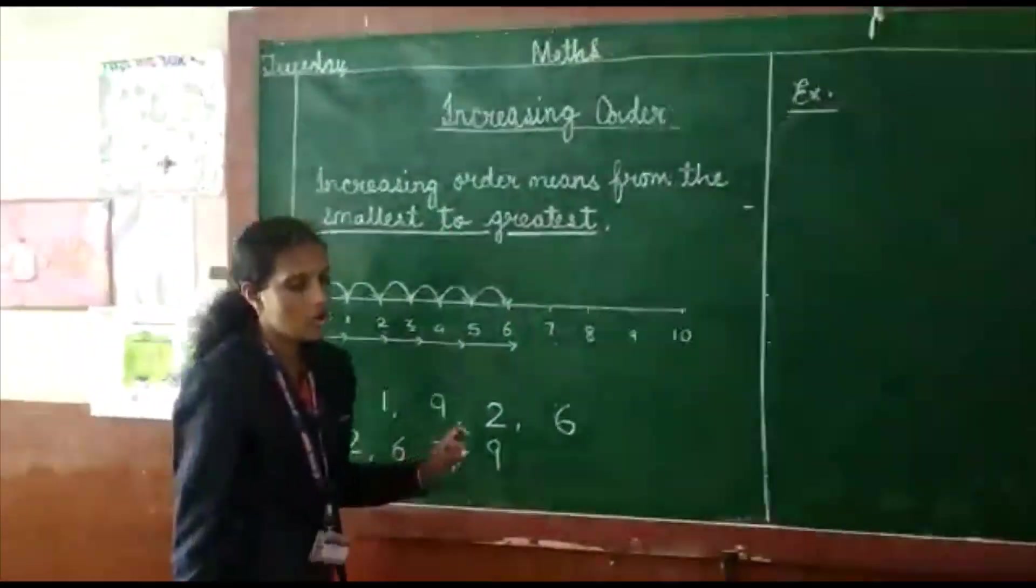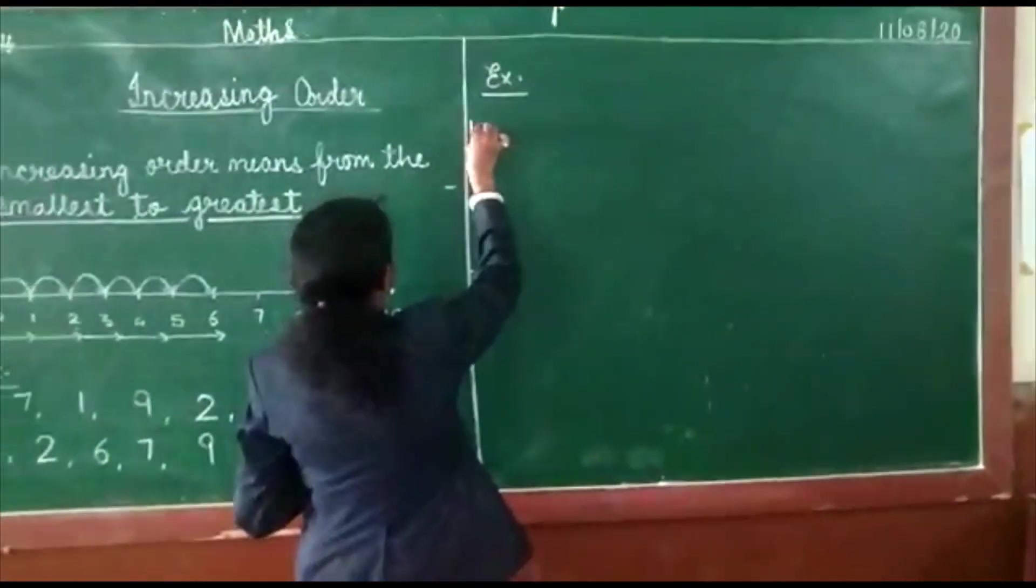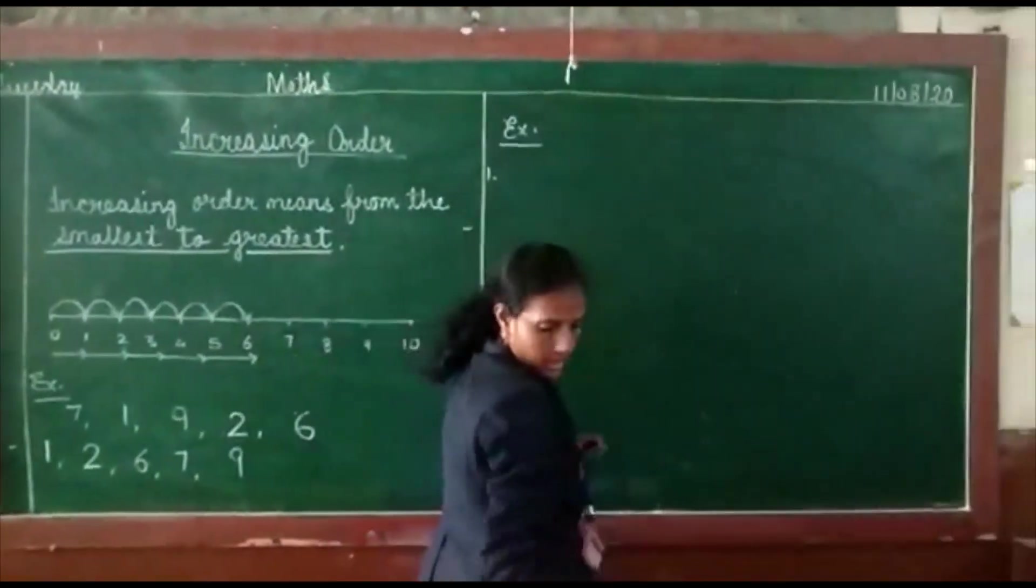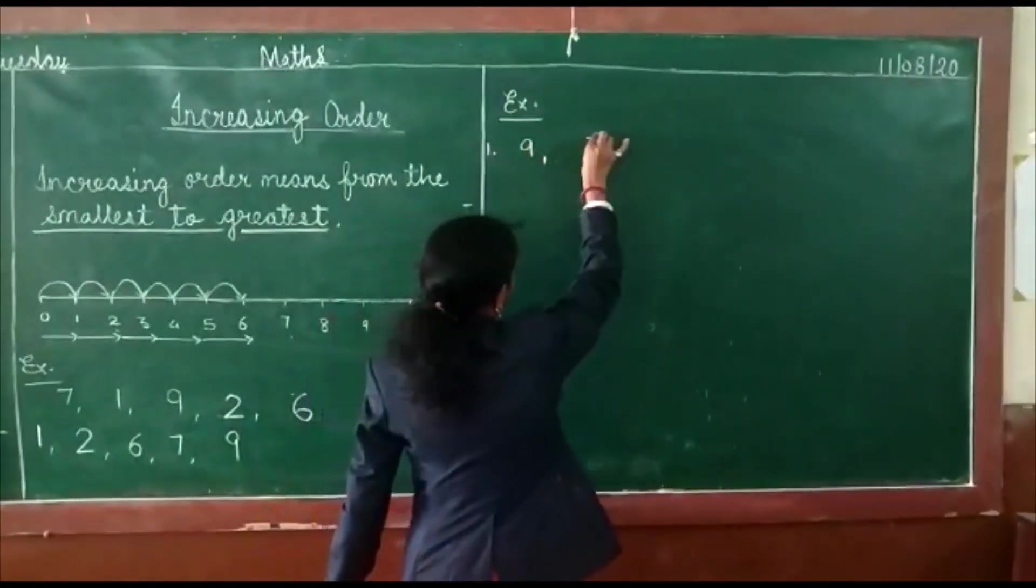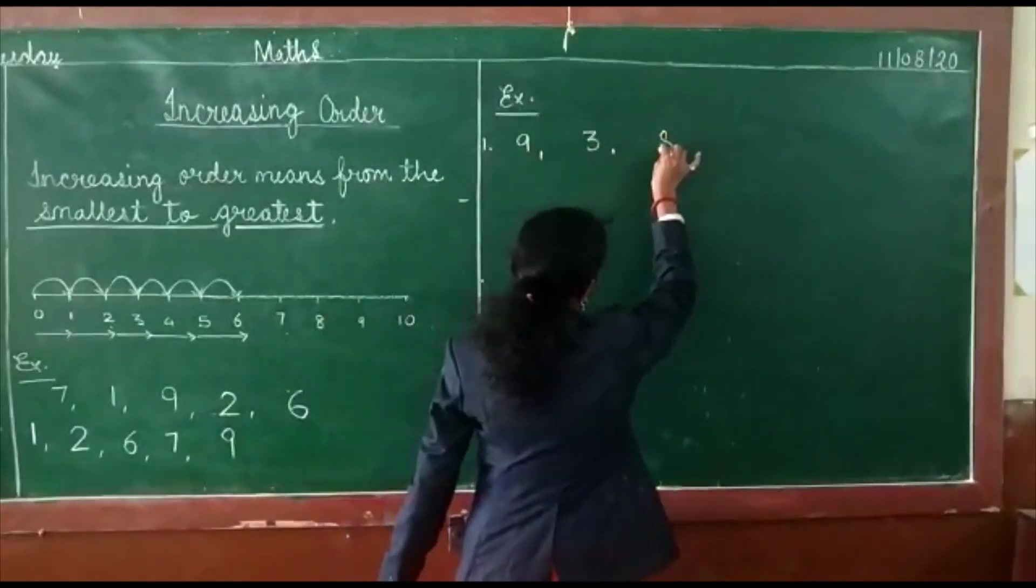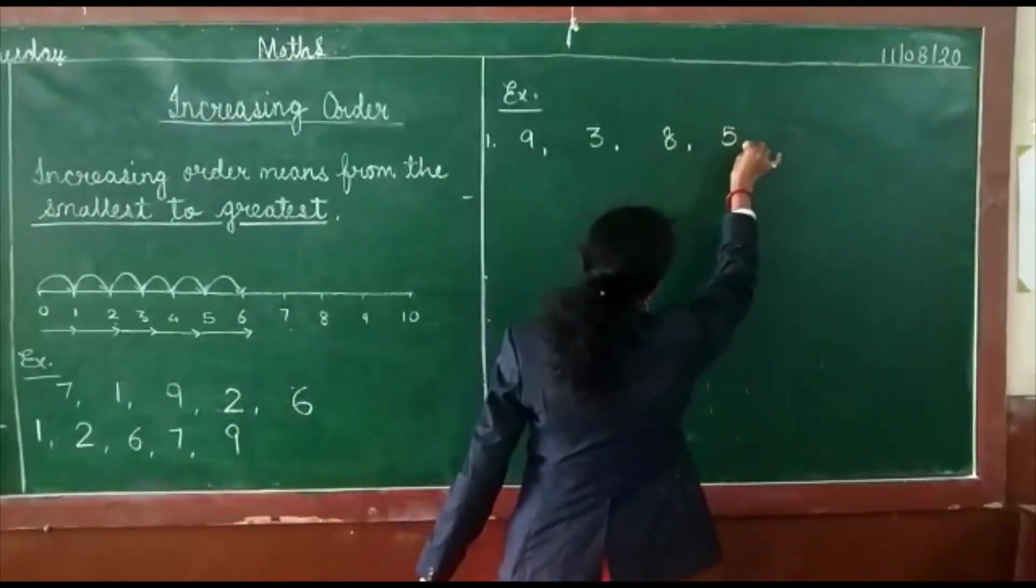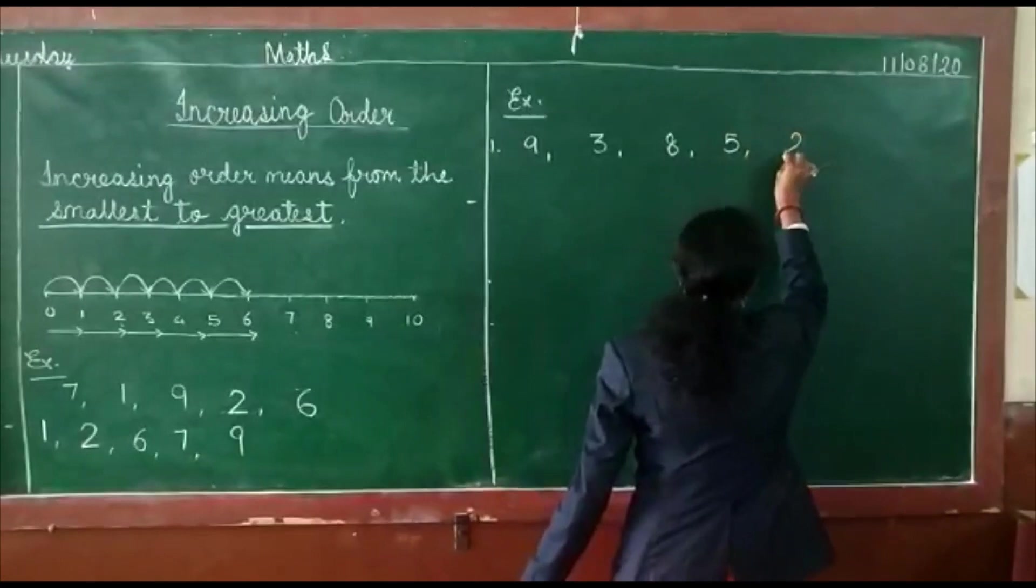Now we can solve some exercises for increasing order. Our first exercise is nine, three, eight, five, and two.